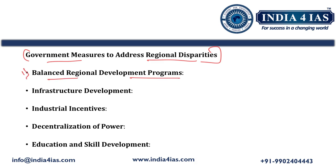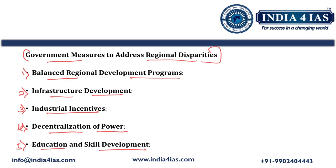Government measures to address regional disparities: first, balanced regional development programs like the Backward Region Grant Fund, Aspirational Districts Program and special category status. Second, infrastructure development — schemes like Pradhan Mantri Gram Sadak Yojana, Bharat Mala Yojana and Sagar Mala Yojana. Third, industrial incentives — tax holidays, subsidies and special economic zones in remote areas. Fourth, decentralization of power — Panchayati Raj system and local governance to empower local bodies. Fifth, education and skill development — Skill India Mission, National Apprenticeship Promotion Scheme and Sarva Shiksha Abhiyan to improve education and employability in backward regions.